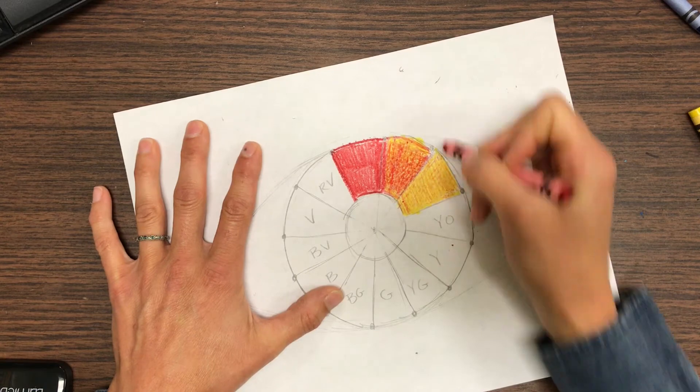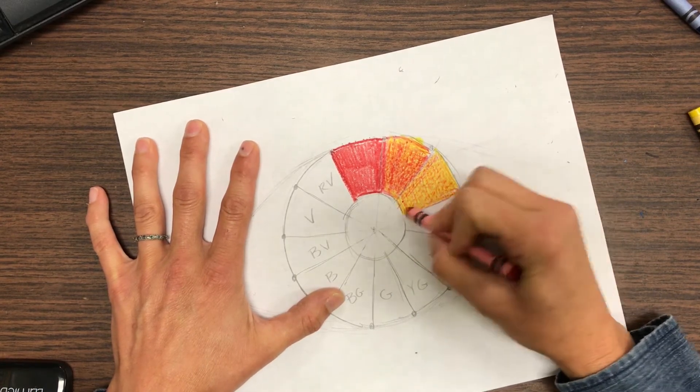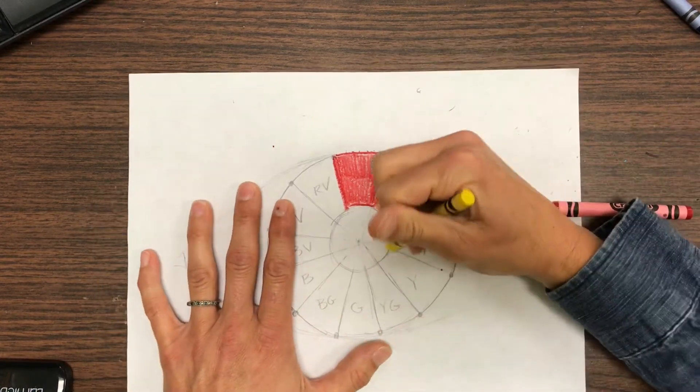So that looks like a red orange. This might be a little bit too light, make that a little bit more orange. And then yellow orange.